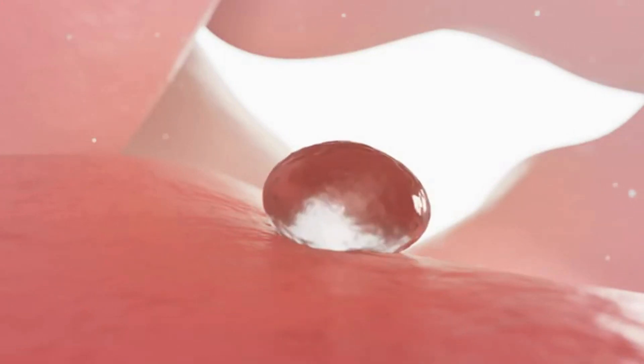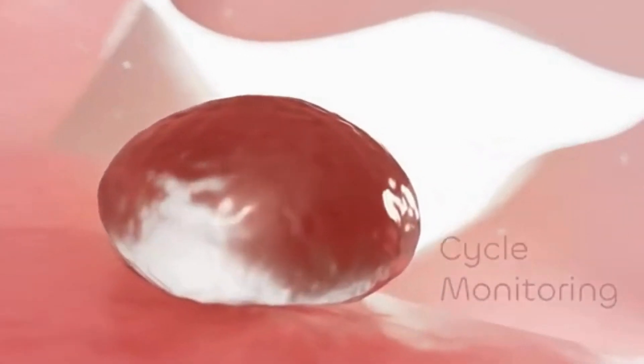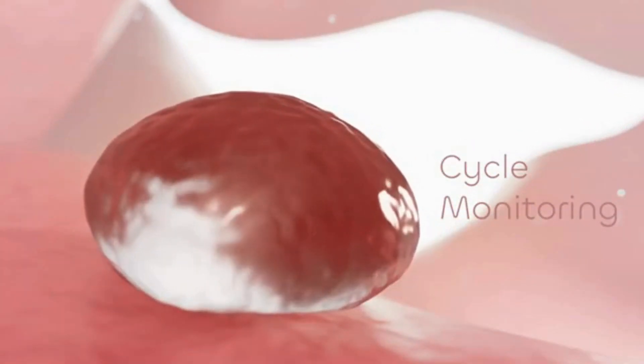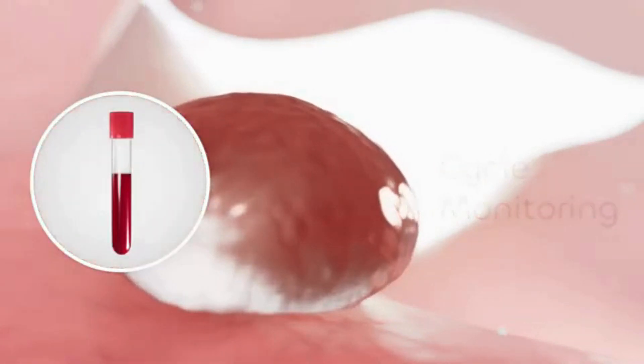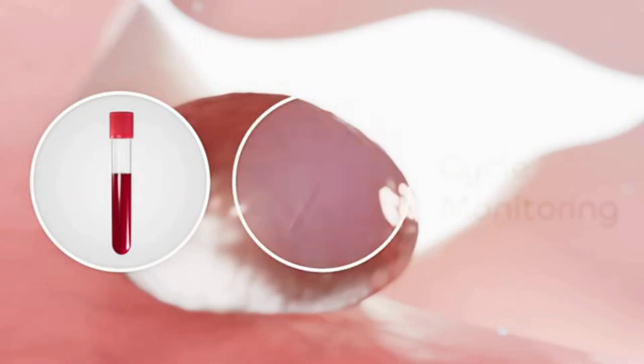The maturation progress of the egg will be closely followed. This stage of the IUI process is known as cycle monitoring. Blood tests and transvaginal ultrasounds are used to track the development of a follicle or multiple follicles in your ovaries.